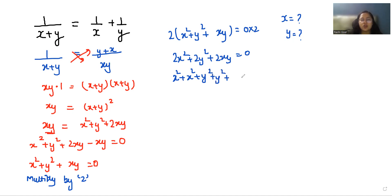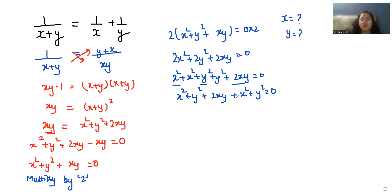We can write 2x² as x² + x², similarly 2y² as y² + y², plus 2xy = 0. So grouping these terms together: (x² + y² + 2xy) + (x² + y²) = 0.